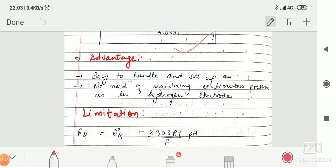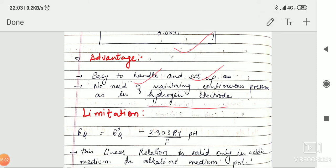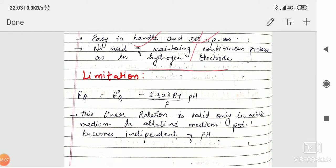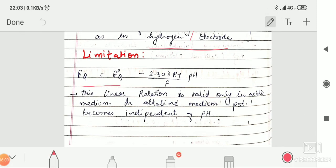The advantage of this quinhydron electrode is that it is easy to handle and easy to set up. In hydrogen electrode, you always have to maintain one atmospheric pressure, but there is no requirement of maintaining such kind of pressure. It is easy to handle.